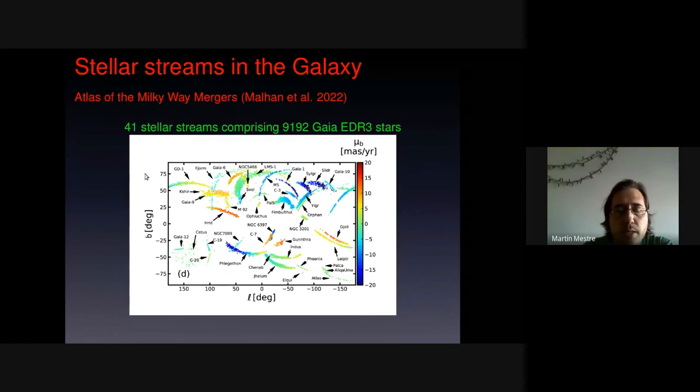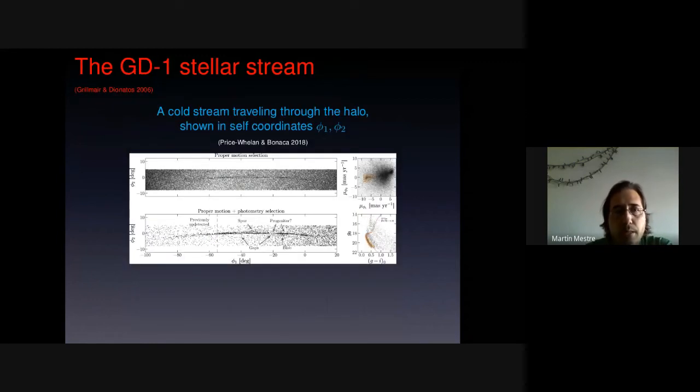Well, in this talk we will be interested in GD1. The GD1 stellar stream is a cold stream traveling through the halo. Here shown in its self coordinates, which are great circles. Phi1 is an angle that goes along the stream and Phi2 goes across it.